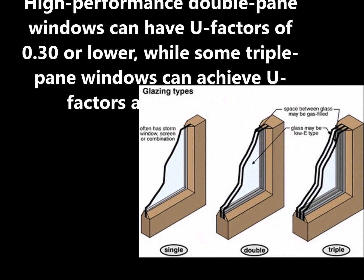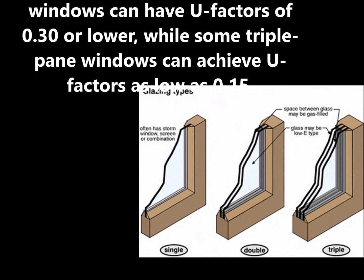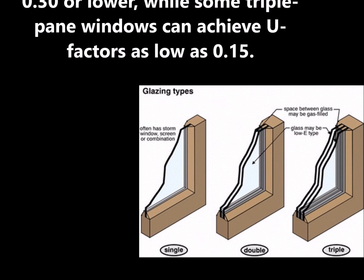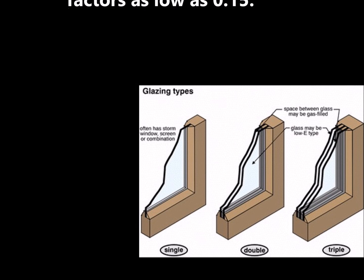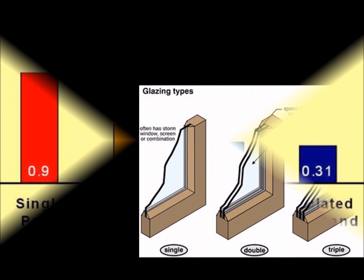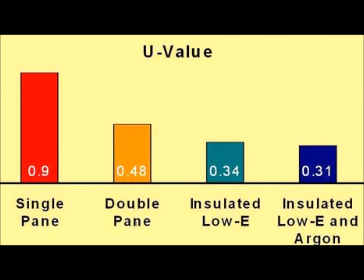High performance double pane windows can have U-Factors of 0.30 or lower, while some triple pane windows can achieve U-Factors as low as 0.15. Low U-Factors are most important in heating dominated climates, although they are also beneficial in cooling dominated climates. Energy Star provides recommended U-Factors for your climate. Additionally, the window selection tool compares average simulated energy costs for your location based on various window types. We've included a sample of how to input the data for your location as well as a resulting report in the course following this video component.